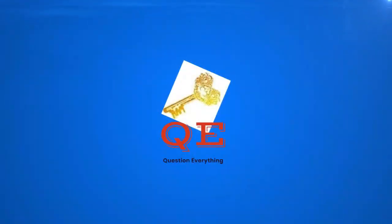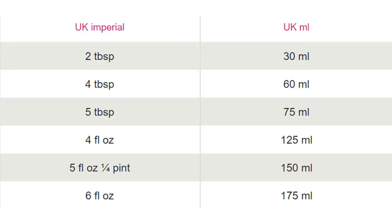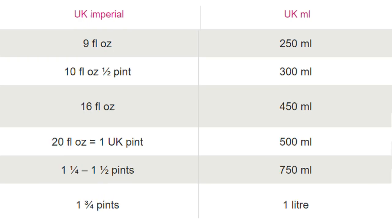Hello everyone and welcome. The UK is officially metric in line with the rest of Europe, although the UK still uses both metric and imperial measuring, which can get confusing, whereas the US only uses imperial.